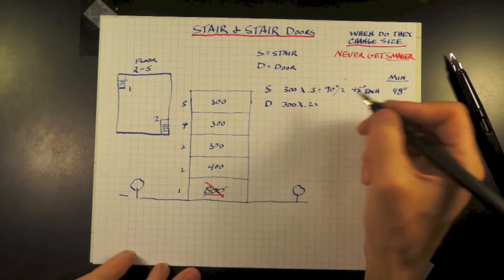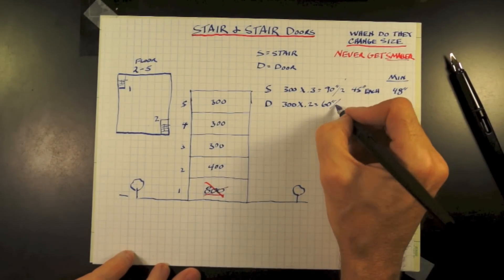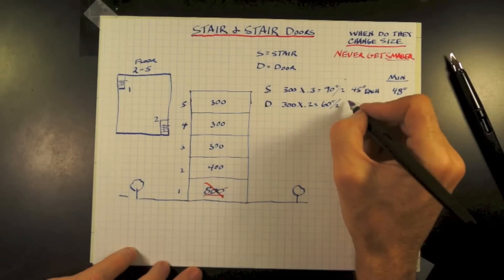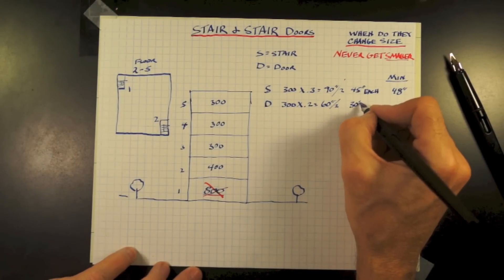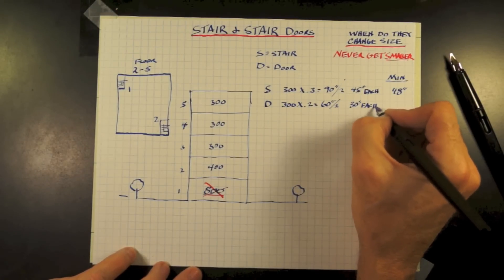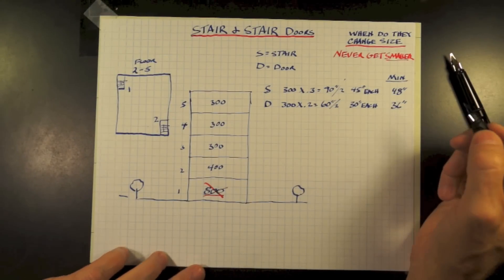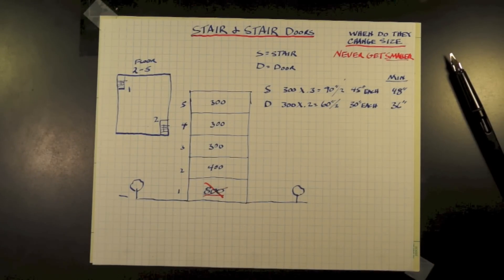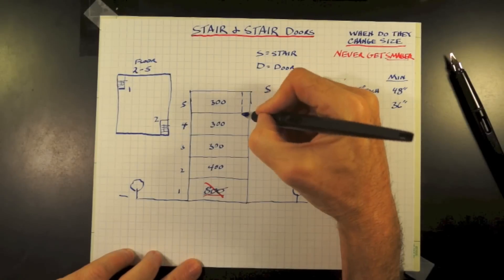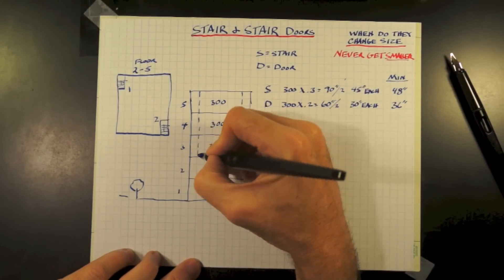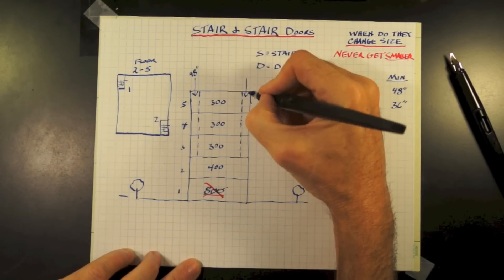Our door leading to the stair: 300 people occupant load times 0.2 equals 60 inches required divided by two stair doors equals 30 inches each. Minimum requirement 36, so we're okay also at 36 inches. We're going to show here the stair going down the building at 48 inches down to the second floor.